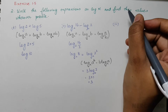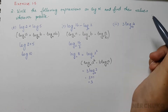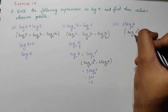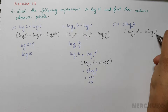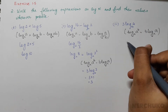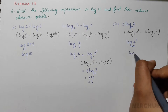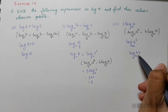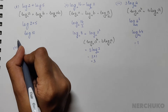For the third part, we have 3 log 4 to base 64. Applying the power rule formula, log a to the power of b to base n equals b times log a to base n, we convert this to log 4 cubed to base 64. Since 4 cubed is 64, we have log 64 to base 64, which equals 1.